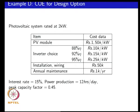We will assume that the installation and wiring cost for installing this photovoltaic system is 50,000 rupees, and there is no major annual maintenance — you might have to clean the PV panels — and we will assume that costs 1000 rupees per year as annual maintenance cost. We will assume an interest rate of 15 percent, and the power is being produced by this panel 12 hours a day. Obviously it is not going to produce 2 kilowatts early morning or late evening, so we will assume a peak capacity factor of 0.45 — meaning on an overall day basis 0.45 of the peak power is being produced. The question is can we use the cost of energy calculation in making a design decision.